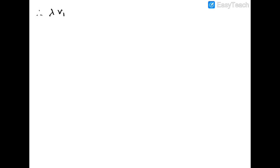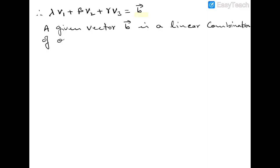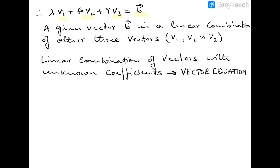Therefore, for any given vector equation λv1 + βv2 + γv3 = b, we can say that a given vector b is a linear combination of the other three vectors v1, v2, and v3.